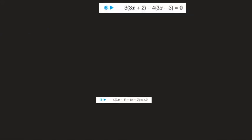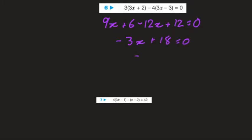Multiplying by 3 — I can't divide through here. So 3 times 3x is 9x, 3 times 2 is 6, minus 4 times 2x is minus 12x, minus 4 times minus 3 is plus 12, and that equals 0. Gathering like terms: 9x minus 12x is minus 3x, plus 6 plus 12 is plus 18, equals 0. Subtracting 18 from both sides and dividing by negative 3, x is equal to 6.